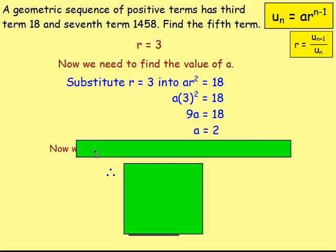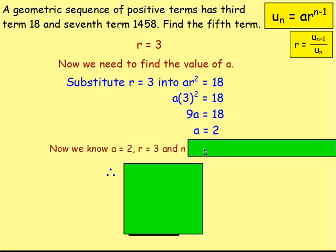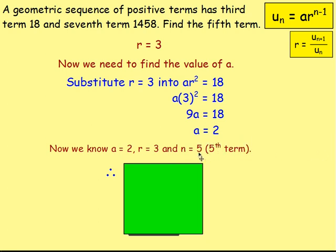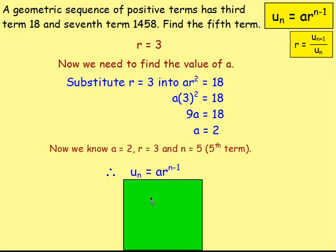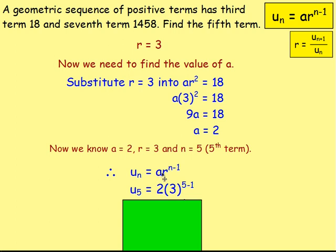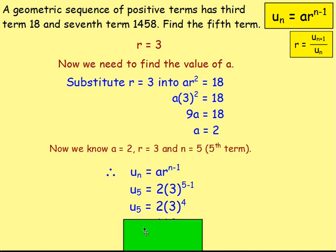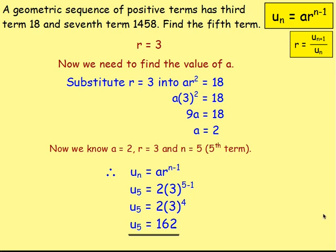So we now know that a equals 2, r equals 3, and n equals 5 because we're finding the fifth term. Therefore, u5 equals a times r to the n minus 1: replace a with 2, r with 3, and n with 5, so it's 2 times 3 to the power of 4. That works out to be 162.